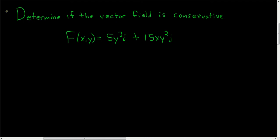Determine if the vector field is conservative. Let's go ahead and work this out. So solution. This here is going to be our big M, and this here is going to be big N.